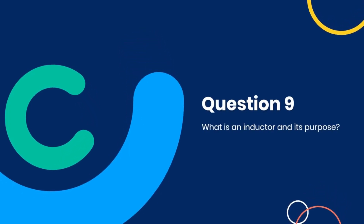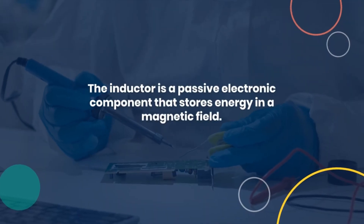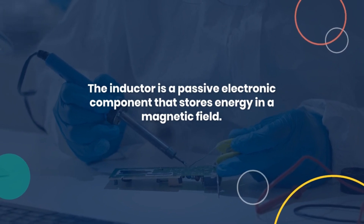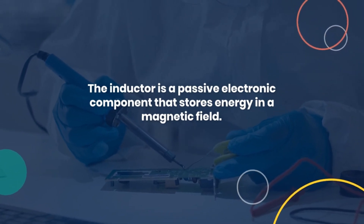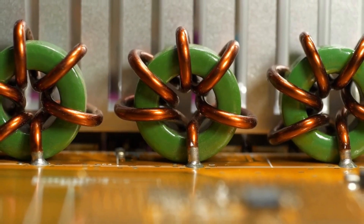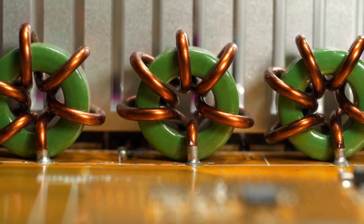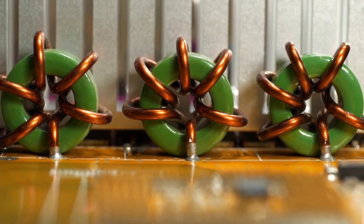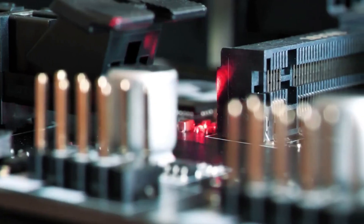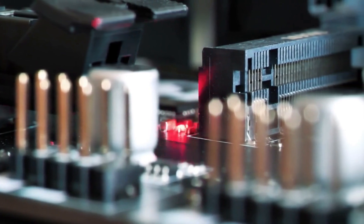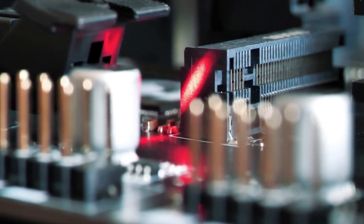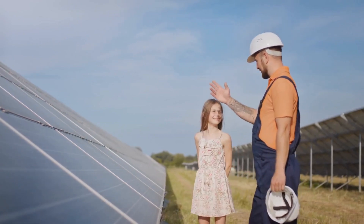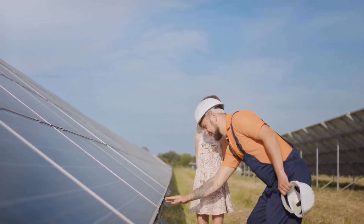Question nine: What is an inductor and its purpose? An inductor is a passive electronic component that stores energy in a magnetic field when current flows through it. It is used in filtering, tuning, and energy storage applications in electrical circuits. Inductors are essential for managing current flow and energy storage in various applications.